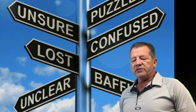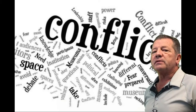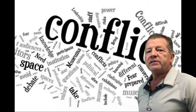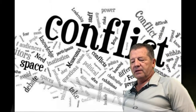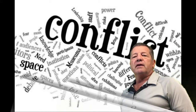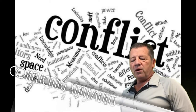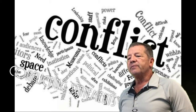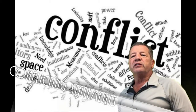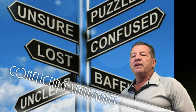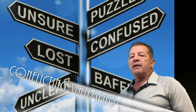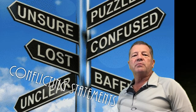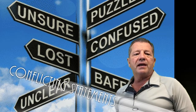Number one is inconsistent or conflicting statements within the body of the appraisal. Often, this is a result of a template with comments that conflict with the pre-printed statements, scope of work, or loaning conditions. Some appraisers add additional scope of work within their appraisal and those scope of work requirements conflict with the pre-printed form.